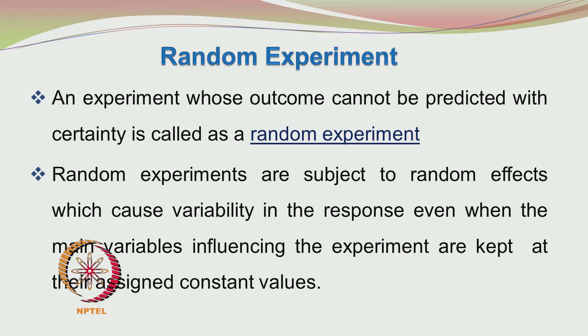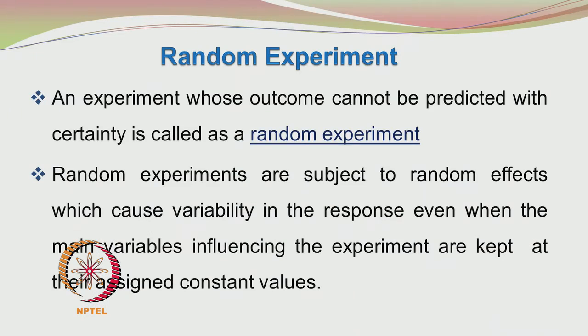So now we come to the random experiment. A random experiment is defined as one whose outcome cannot be predicted with certainty. When you throw a die, any number between 1 to 6 may show up. You cannot certainly say you are going to get a number 1. So this is a random experiment. Random experiments are subject to random effects which cause variability in their response even when the main variables influencing the experiment are kept at their assigned constant values.